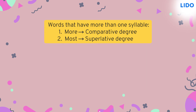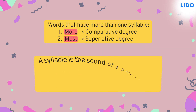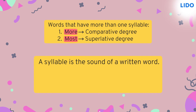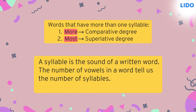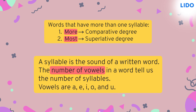For words that have more than one syllable, we use 'more' for comparative and 'most' for superlative. Syllables are sounds we make when we read a word. The number of syllables depends on the number of vowels in the word. Vowels are A, E, I, O and U.